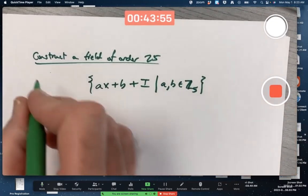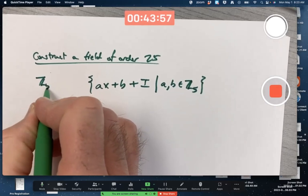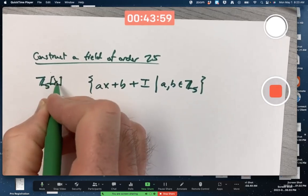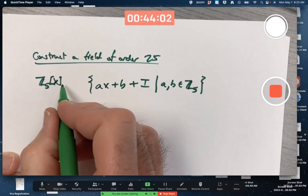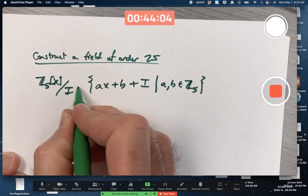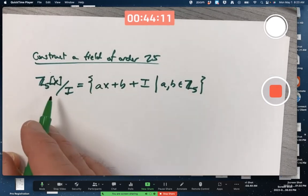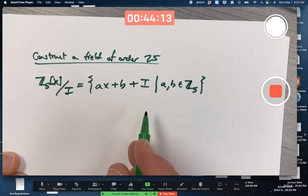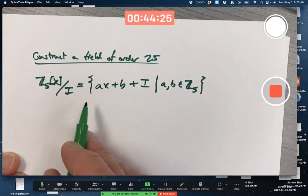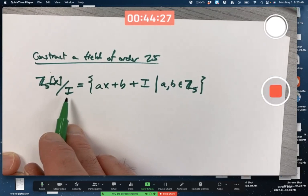How do you create such a factoring? If it's going to be a factoring, it's got to be of this form, right? Take the polynomial ring, Z5X, and mod by some ideal. If I is an ideal in Z5X, such a thing will always be a factoring, but why is it a field? How do you guarantee it's a field, do you remember?